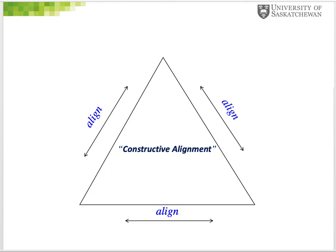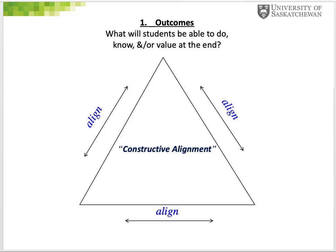So, what are these three elements? First, our outcomes. We begin with a statement of what we want the learning outcomes to be for students — that is, what is it we want students to be able to do, to know, and to value in the end. Getting really clear on exactly what the purpose is and expressing these as learning outcomes is the essential first step for constructive alignment.